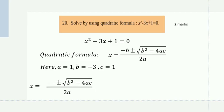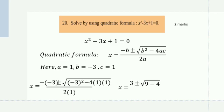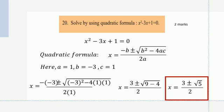Substituting the respective values: x = (−(−3) ± √((−3)²−4×1×1)) / (2×1) = (3 ± √(9−4)) / 2 = (3 ± √5) / 2. So x = (3 ± √5) / 2, which is the answer. You have to highlight this.